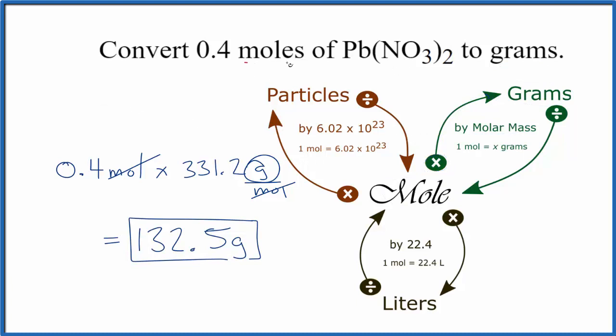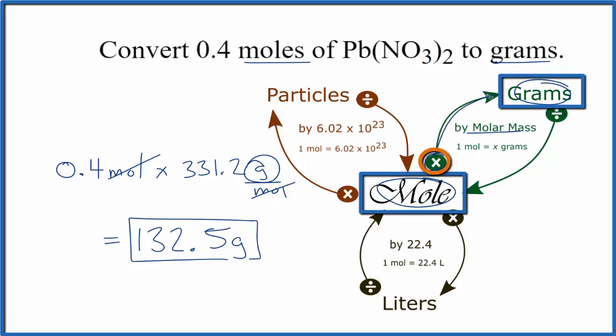To recap, we wanted to go from moles to grams. So we had our moles, we wanted grams. So we multiplied by the molar mass. That gave us grams of lead nitrate.